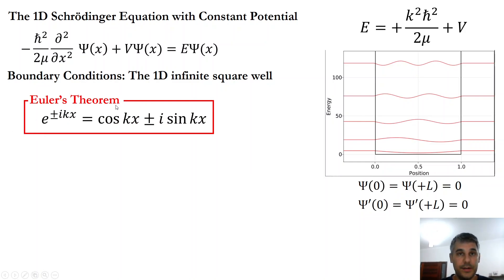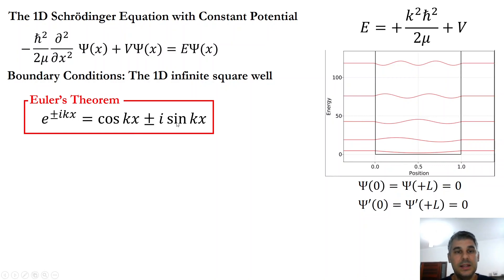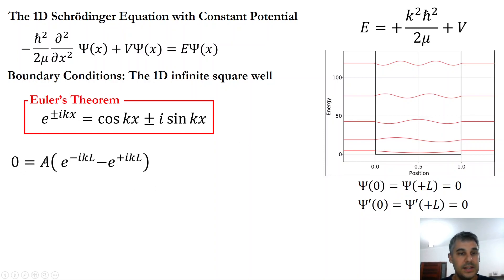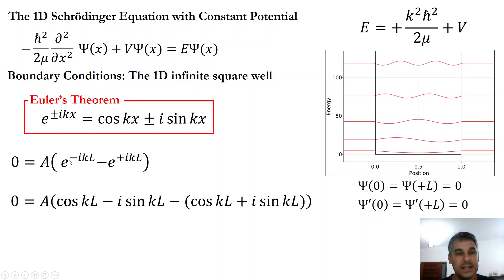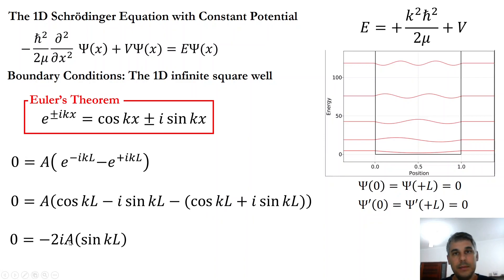We apply Euler's theorem, which states that a complex exponential with argument multiplied by plus or minus i equals the cosine of the argument plus or minus i times the sine of the argument — a very important and useful theorem. Expanding both exponentials, the cosine terms cancel and we are left with minus 2 times i times a times sine of kL equals zero. This is the boundary condition we need to satisfy.